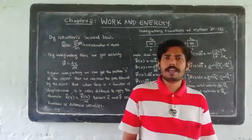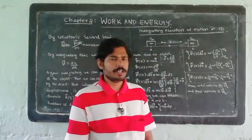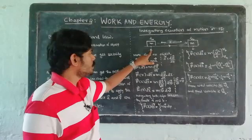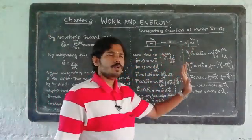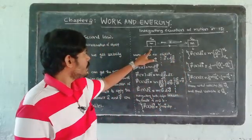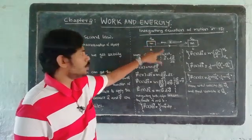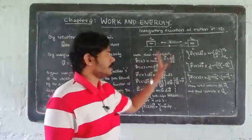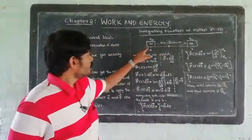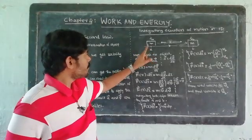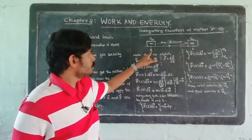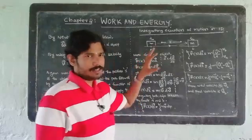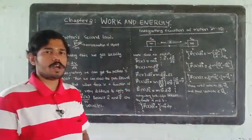We integrate the equation of motion in one-dimensional motion. Consider an object of mass m moving from a point A to point B. The displacement between these two points is x, and the time taken for this motion is T_b minus T_a — final time minus initial time.